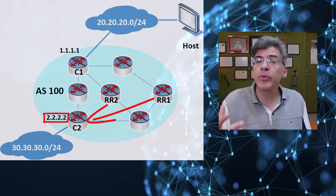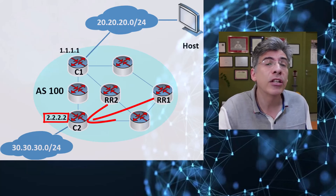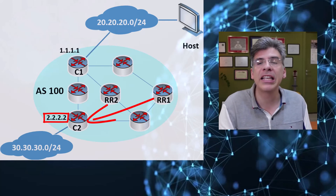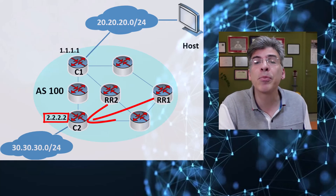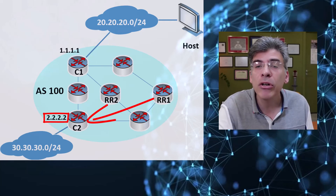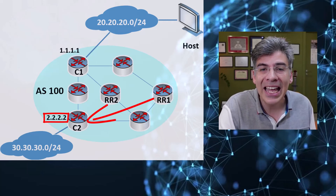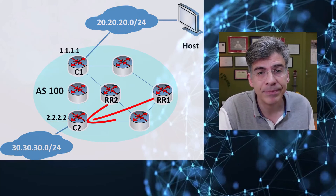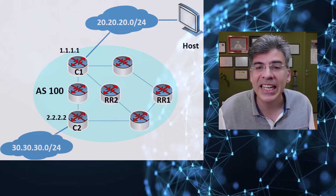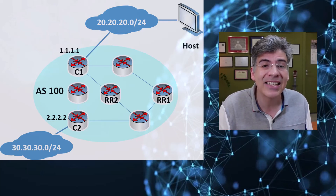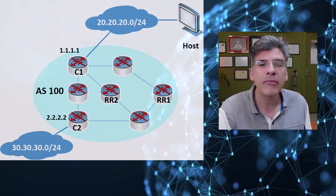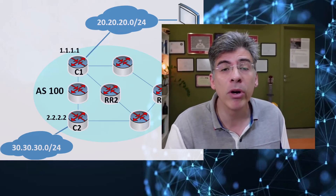Keep in mind that when a route reflector reflects a route to its own clients, it includes the original originator ID in the update. The originator ID is thus preserved throughout the entire route propagation process in an IBGP route reflector environment. This is why the originator ID is sent by the route reflector to both clients and non-client neighbors — and that's the purpose of the originator ID BGP attribute, how it works, and why it's necessary to have it in route reflector environments due to the absence of the IBGP split horizon rule.